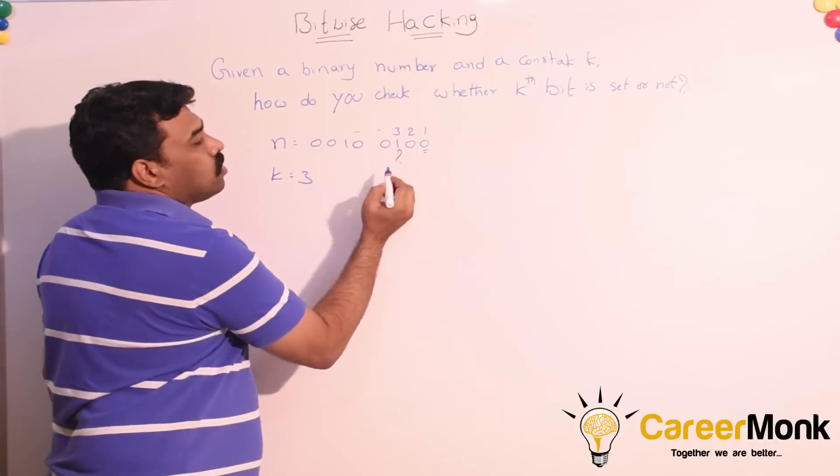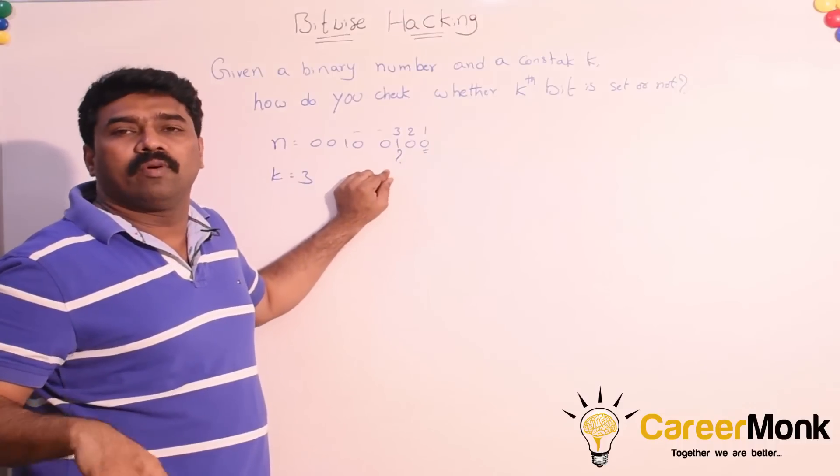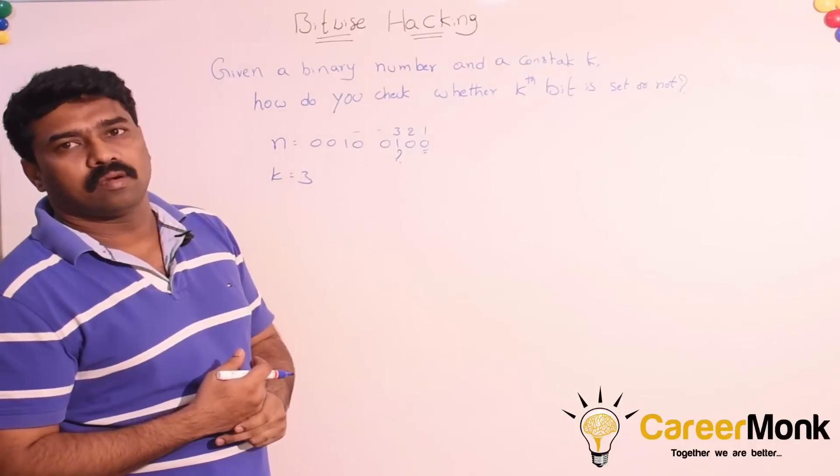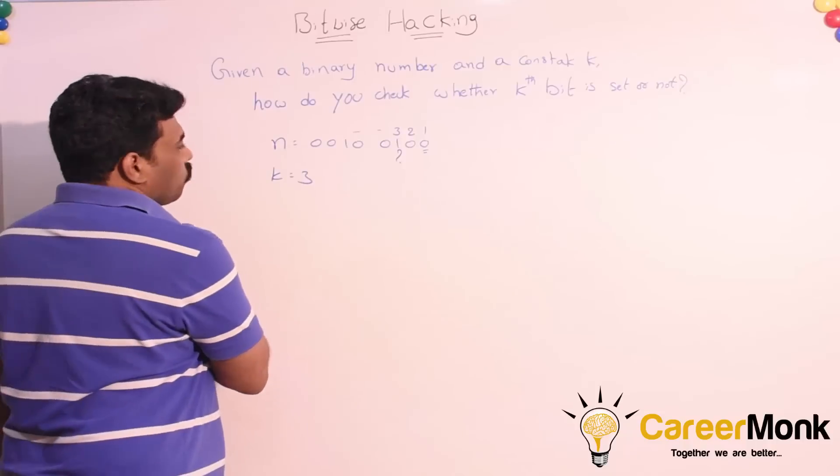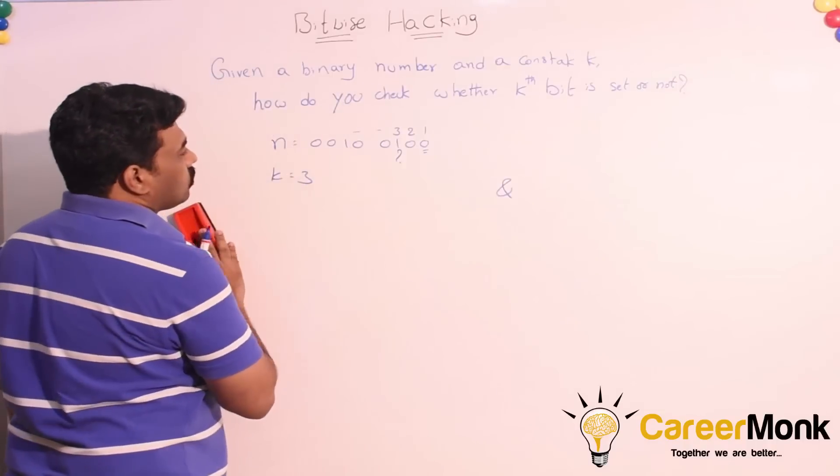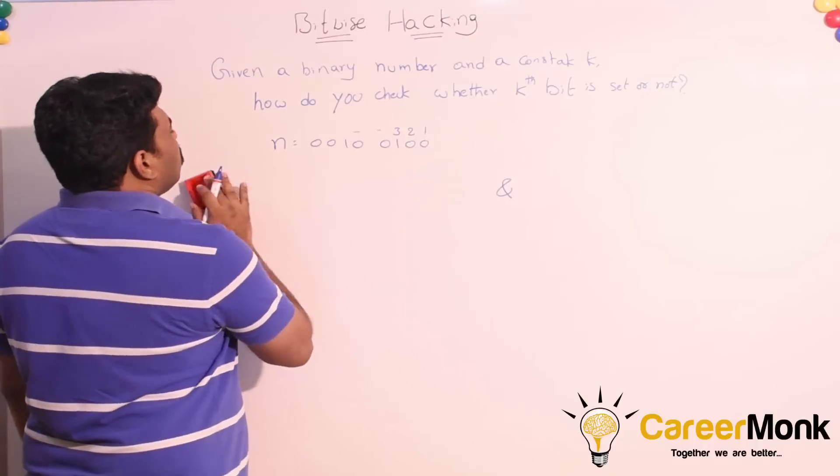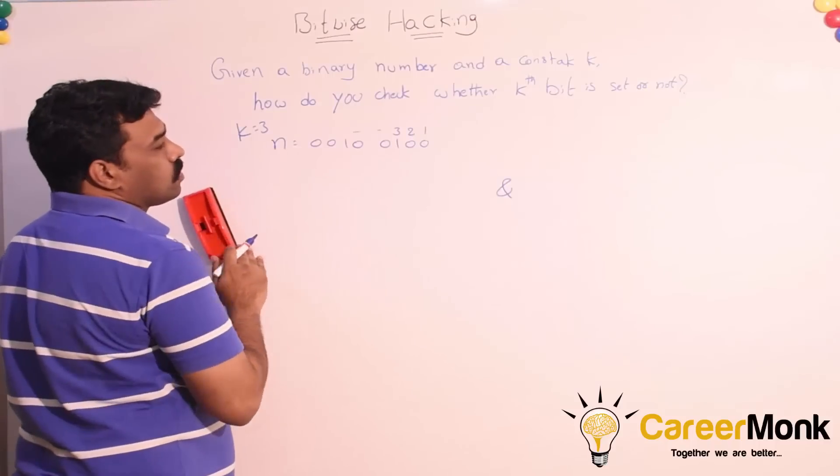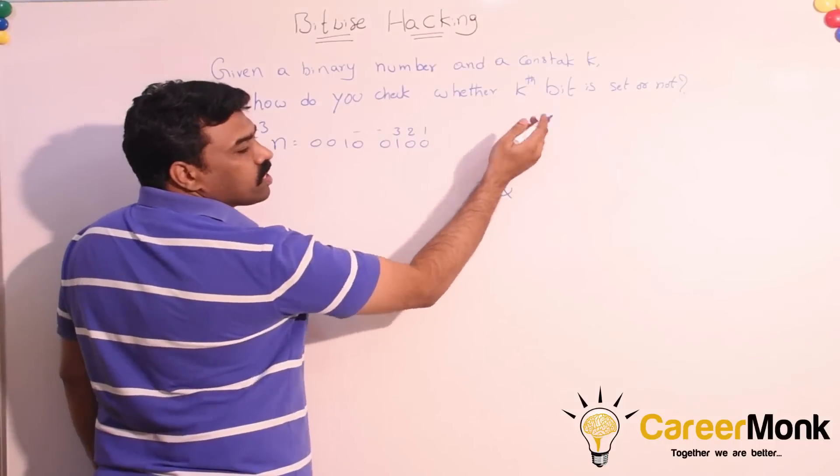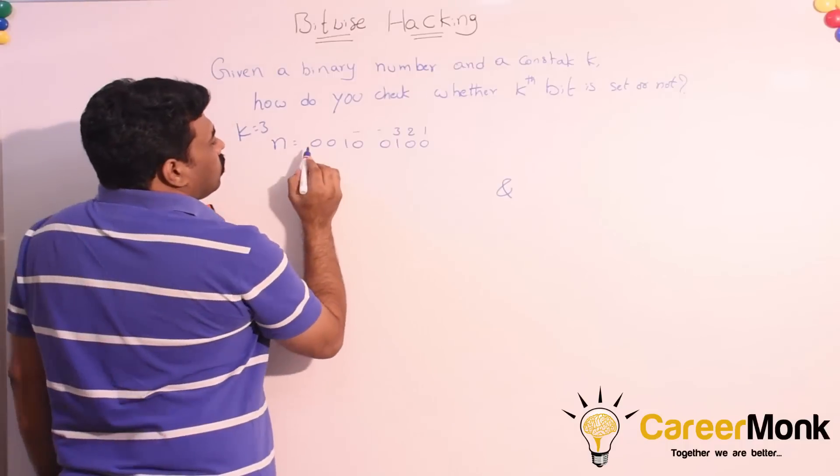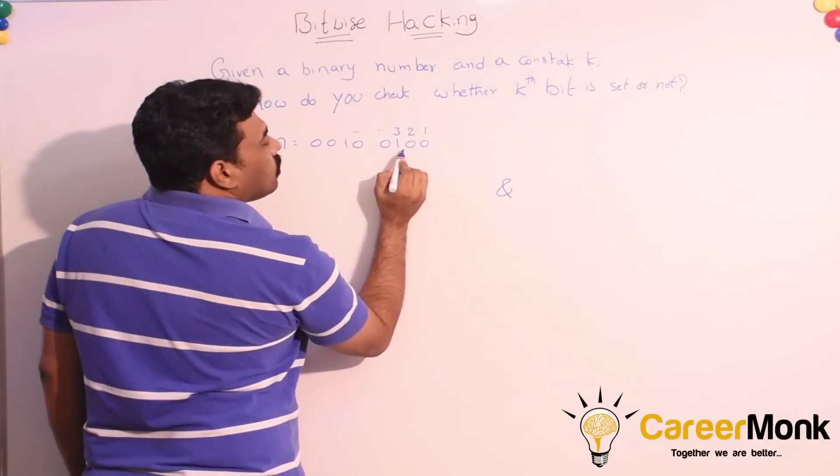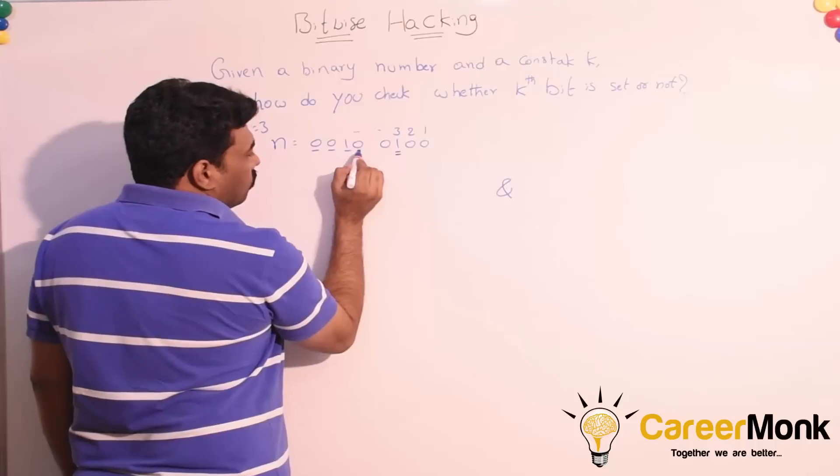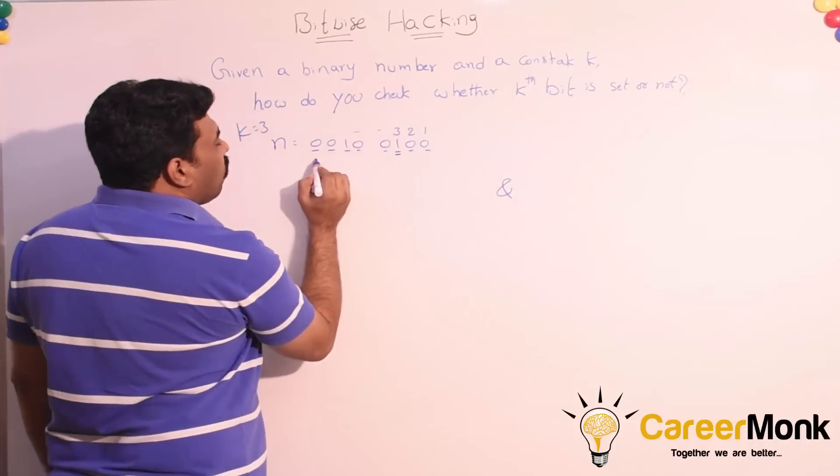Our objective is to see whether only the kth bit is set or not. We don't have to worry for the remaining bits. Let us try some bitwise operator to see whether it helps us or not. We don't have to worry for the remaining bits. For that, except the kth bit, since we don't want to touch the remaining bits, we will make all of them zeros.